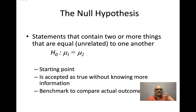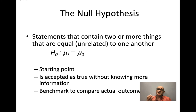In the world, we look around and think that one person is really different than another. But how do you know that? It's because you figured out what is the same on average, so you can say that something is really different than your expectation for the average. Differences are an idea constructed from what is the same. The null hypothesis is accepted as true without knowing any other information, and it's the benchmark by which we compare the actual outcomes.